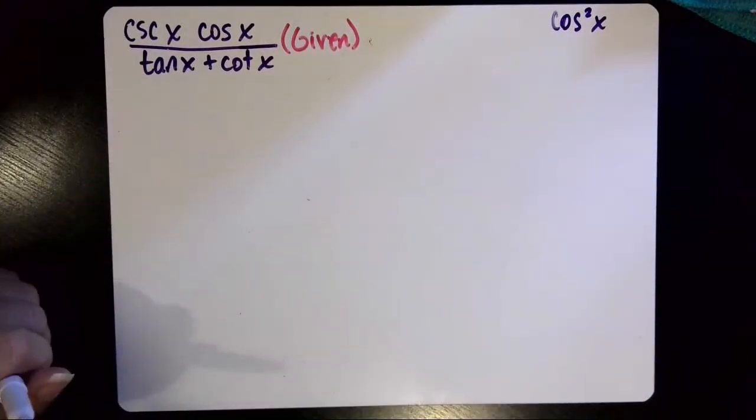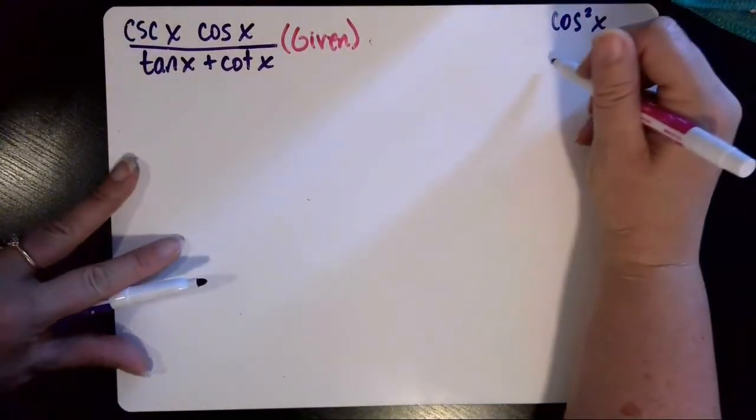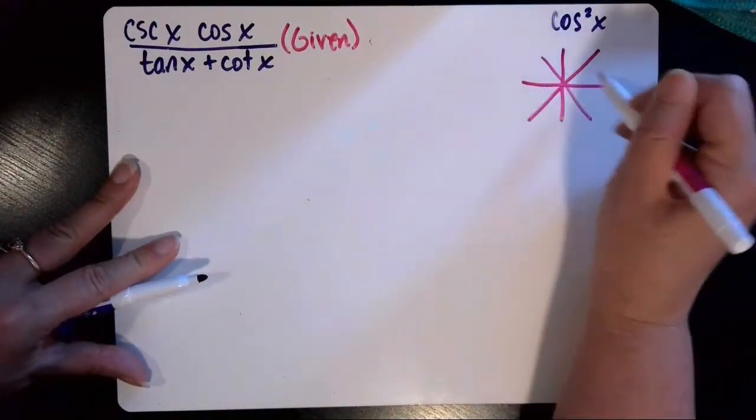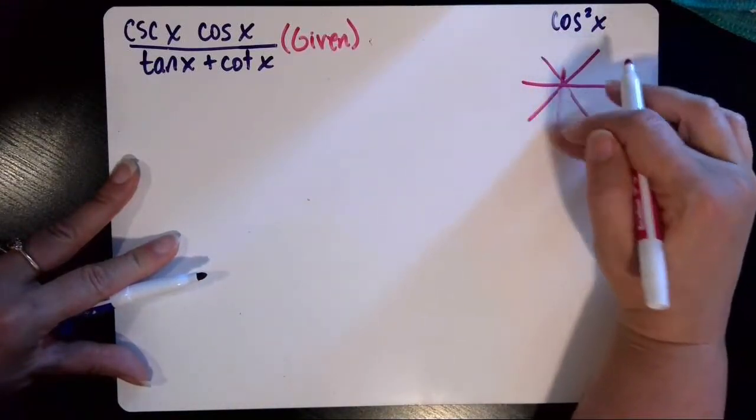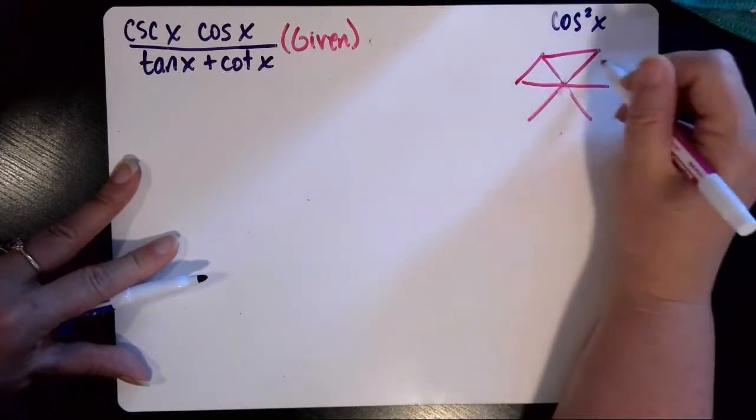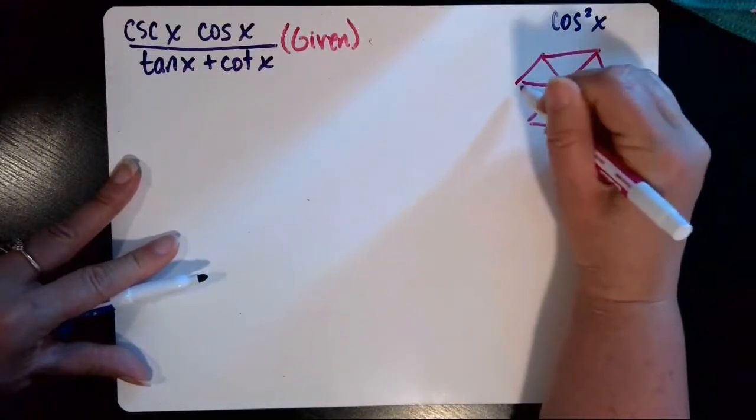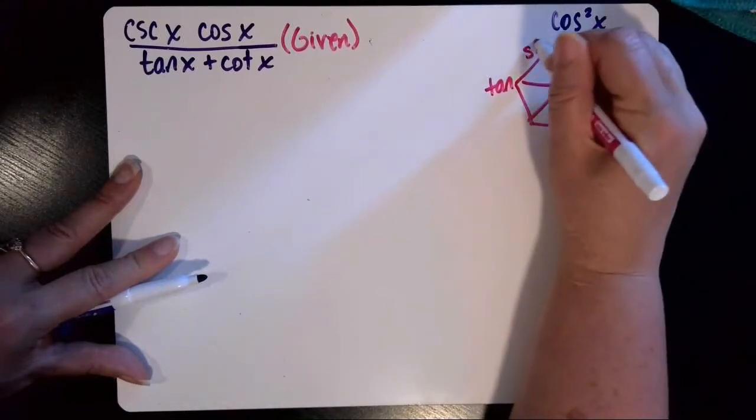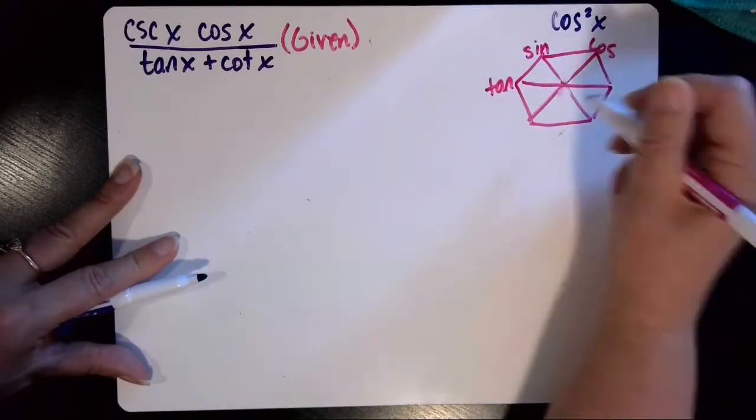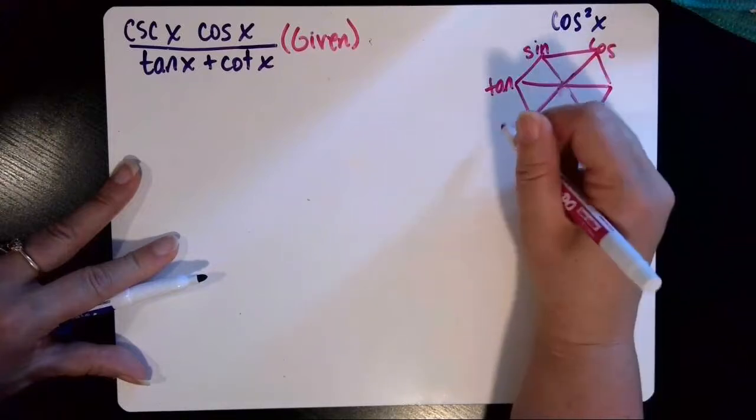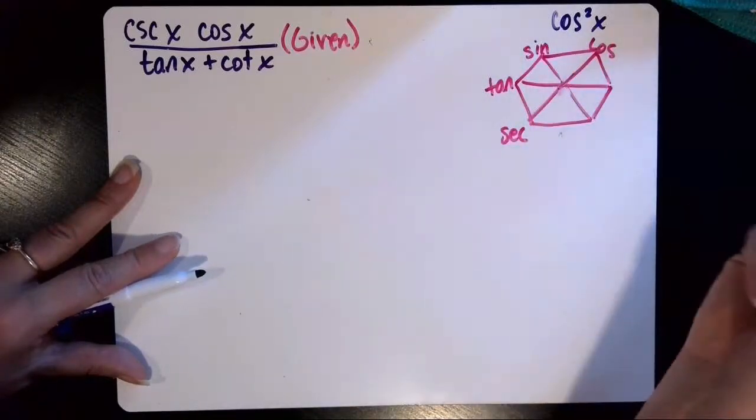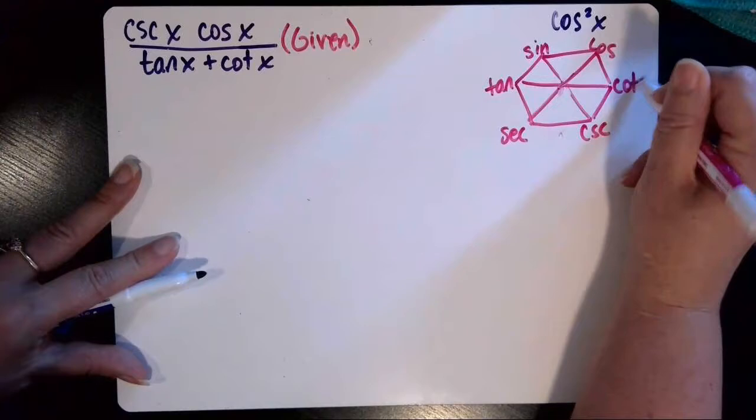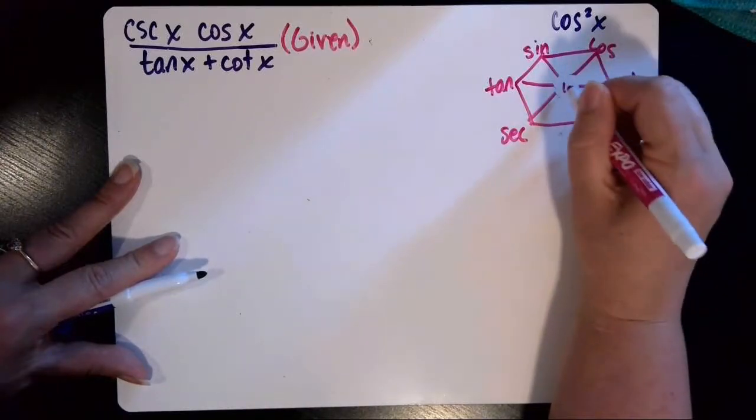Okay, then I'm going to recreate my trig identities hexagon over here in this side so that I can remember what I've got as far as fundamental trig identities to pull from. So tangent is the sine divided by the cosine, and then the reciprocals go on the diagonals. So reciprocal of cosine is secant, reciprocal of sine is cosecant, reciprocal of tangent is cotangent, and the center always gets a one.